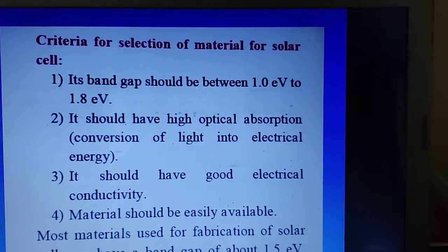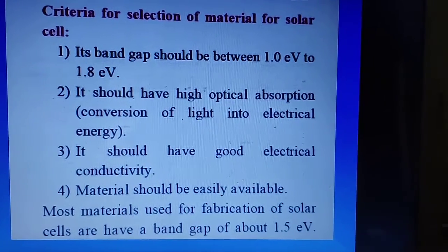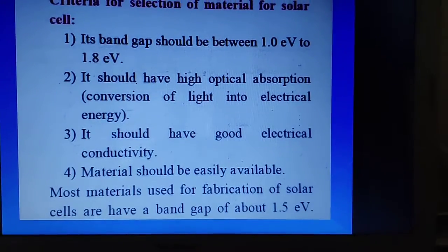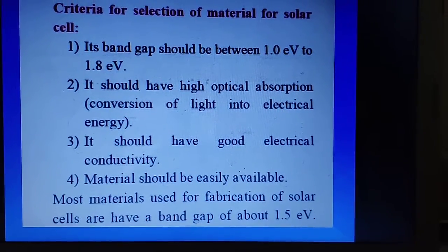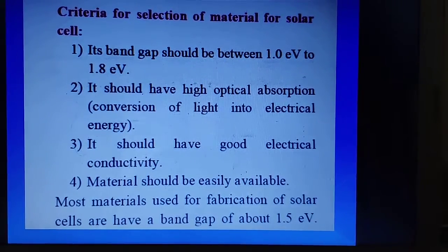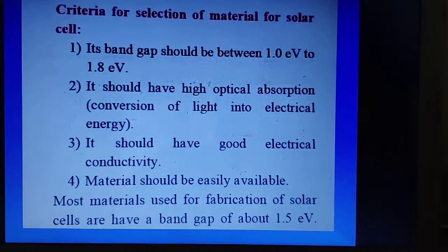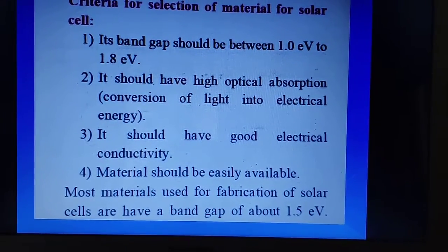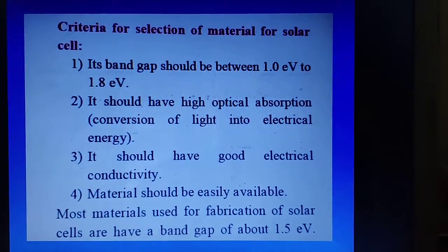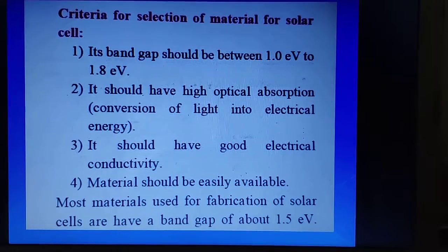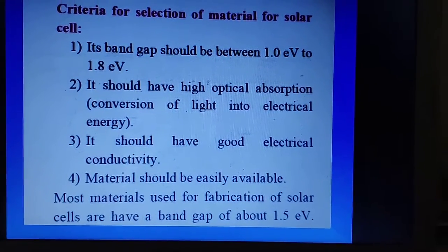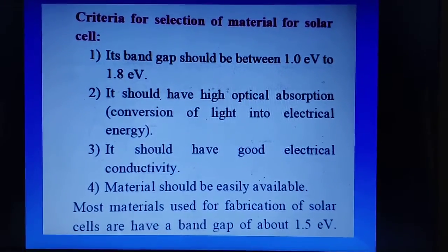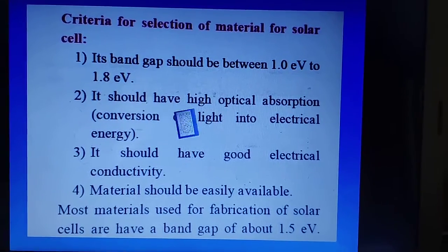Now, what is the criteria for selection of material for solar cell? The material means the coating which should be there on the n-type semiconductor. Its band gap should be between 1.0 electron volt to 1.8 electron volt. Next, it should have optical absorption, that means it should have a capacity to convert light energy into electrical energy. It also should have good electrical conductivity. The material should be easily available. Most of the materials used for fabrication of solar cells have a band gap of about 1.5 electron volt.